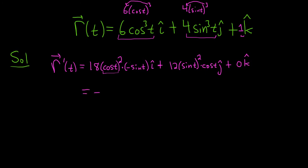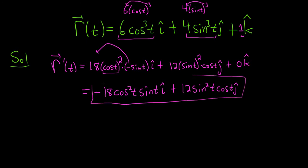So this is equal to negative. I'll put the negative out front. 18 cosine squared t sine t i hat plus 12 sine squared t cosine t j hat. And I'll just omit the 0 k hat. And that'll be the final answer.